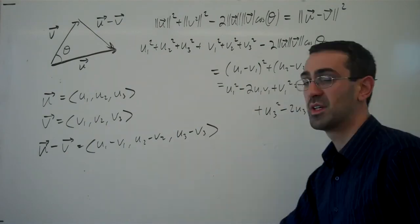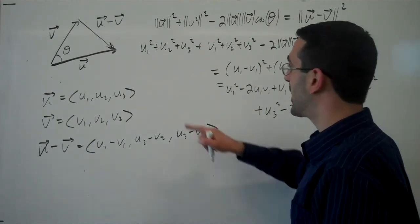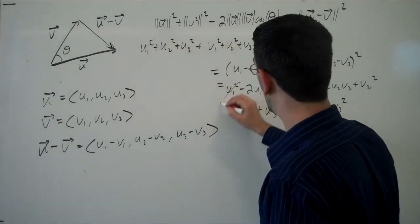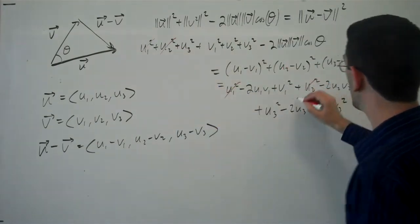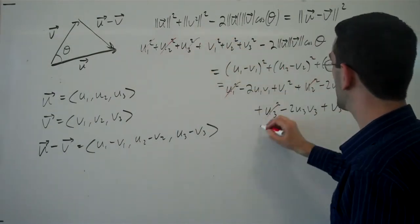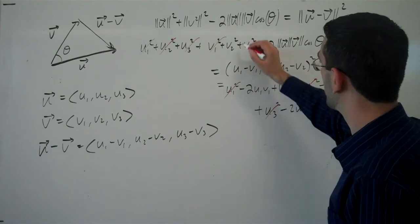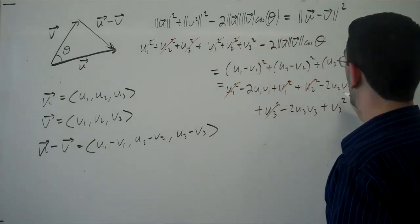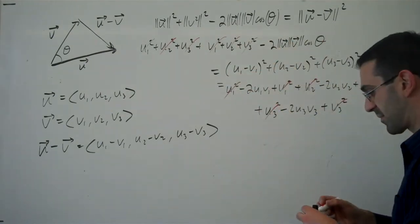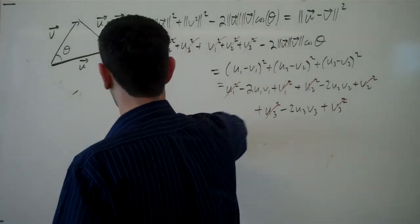Now notice, we can do some canceling here. I can subtract a u1 squared from both sides, a u2 squared from both sides, a u3 squared, a v1 squared, a v2 squared, and a v3 squared. After subtracting all of that,